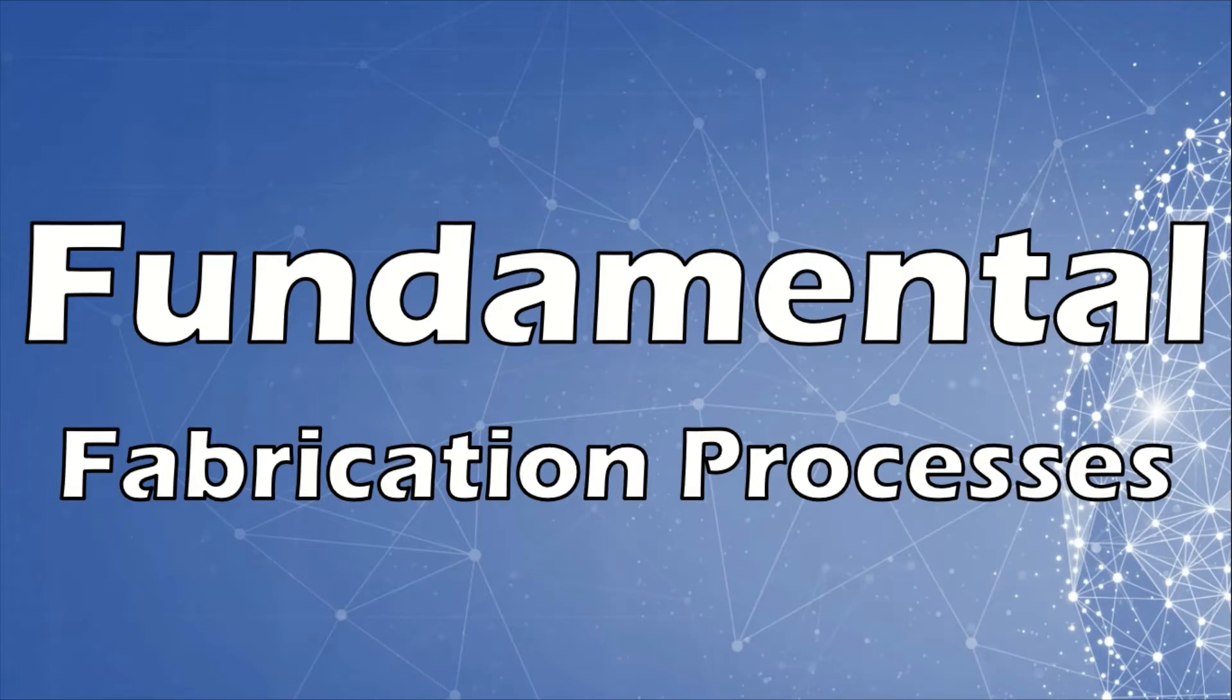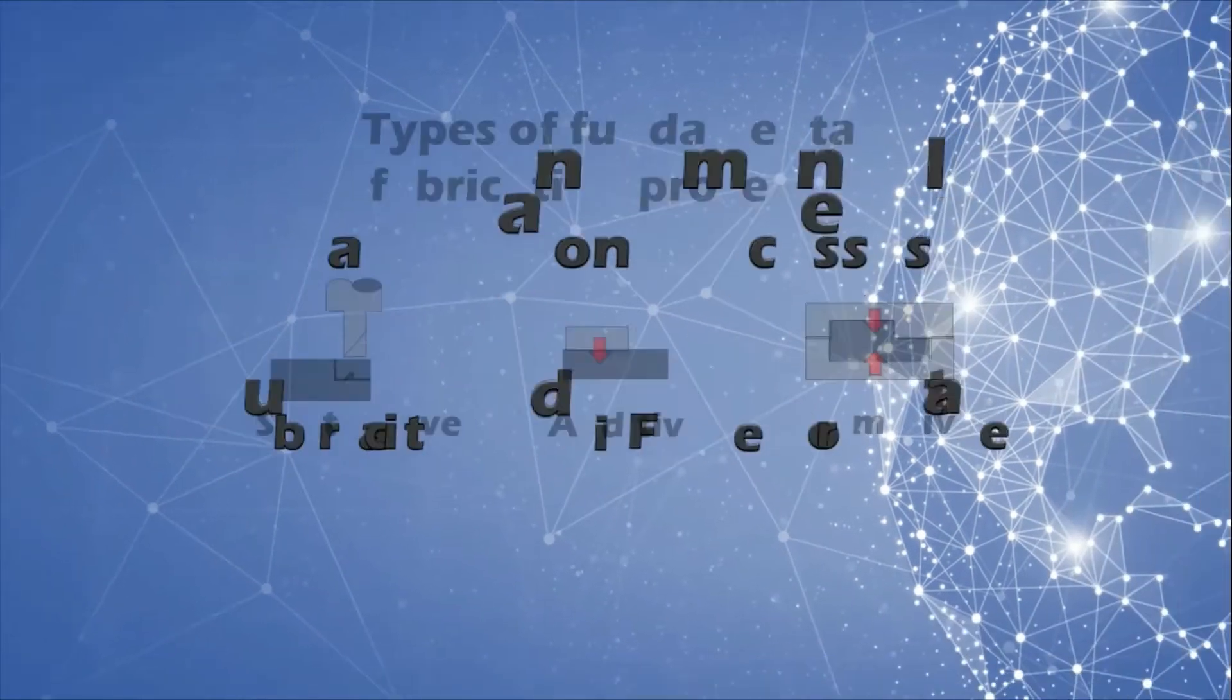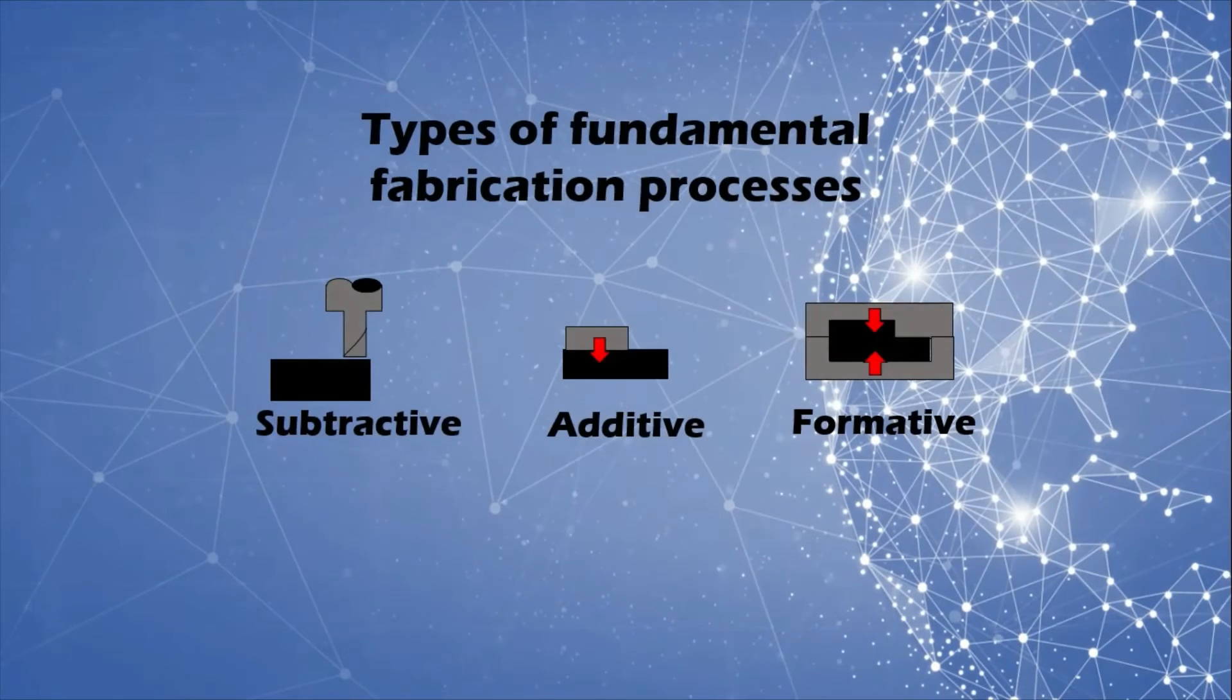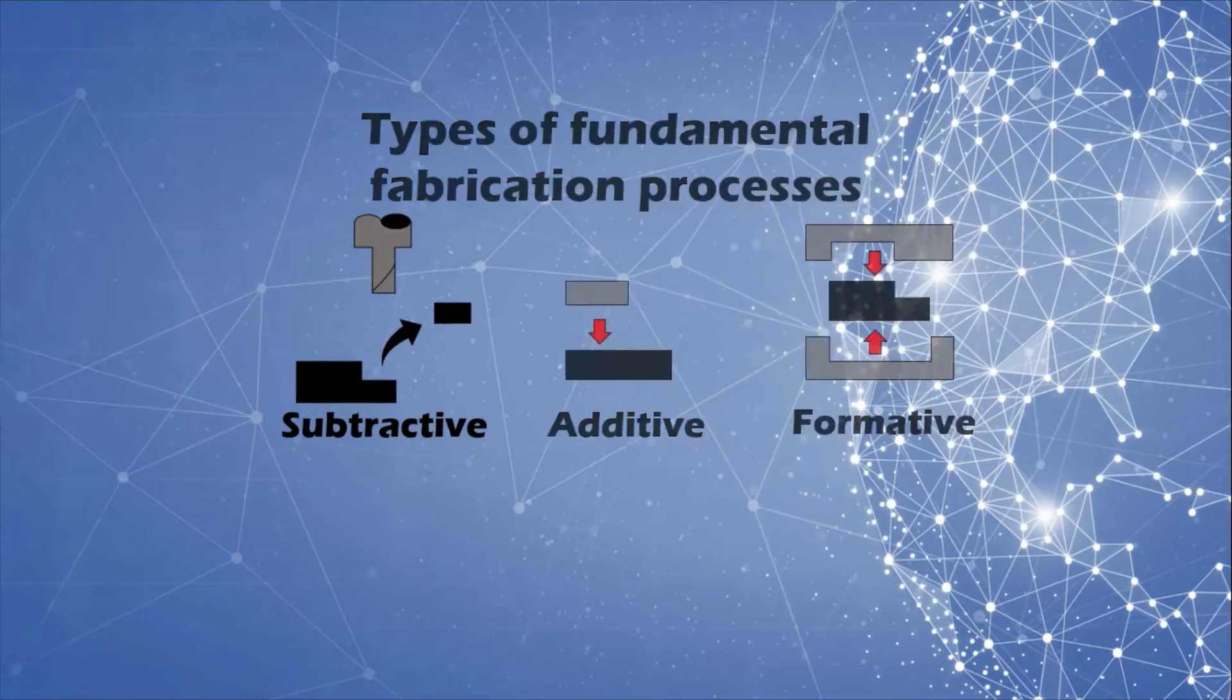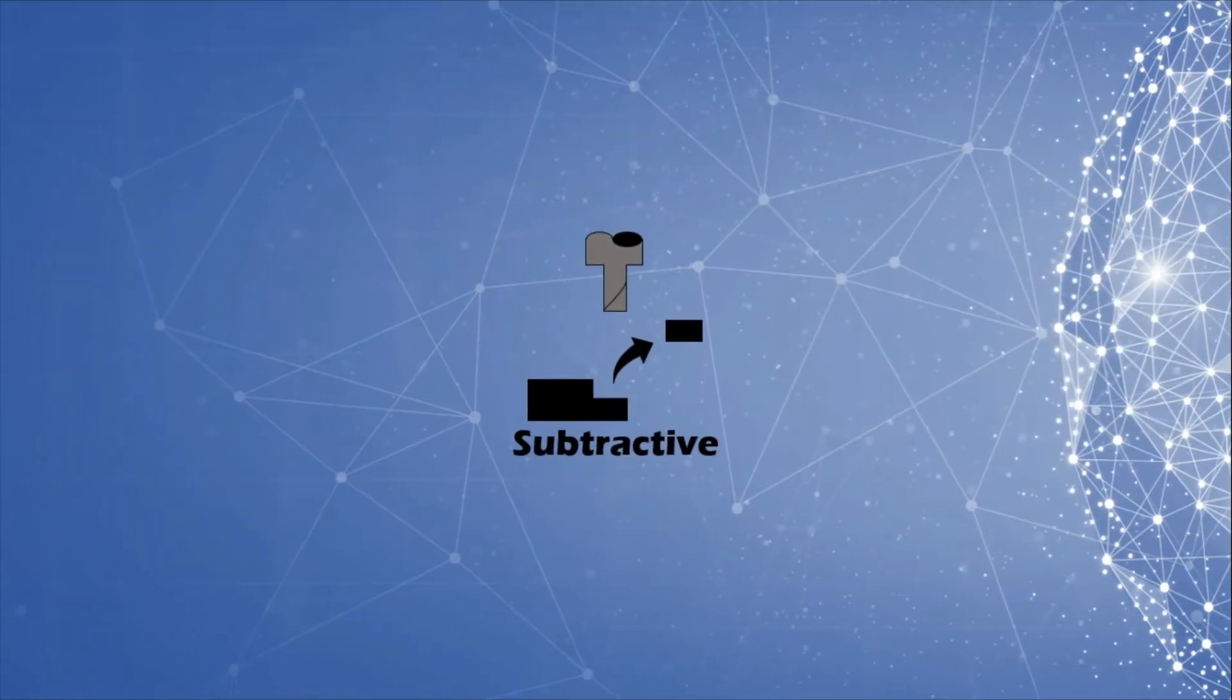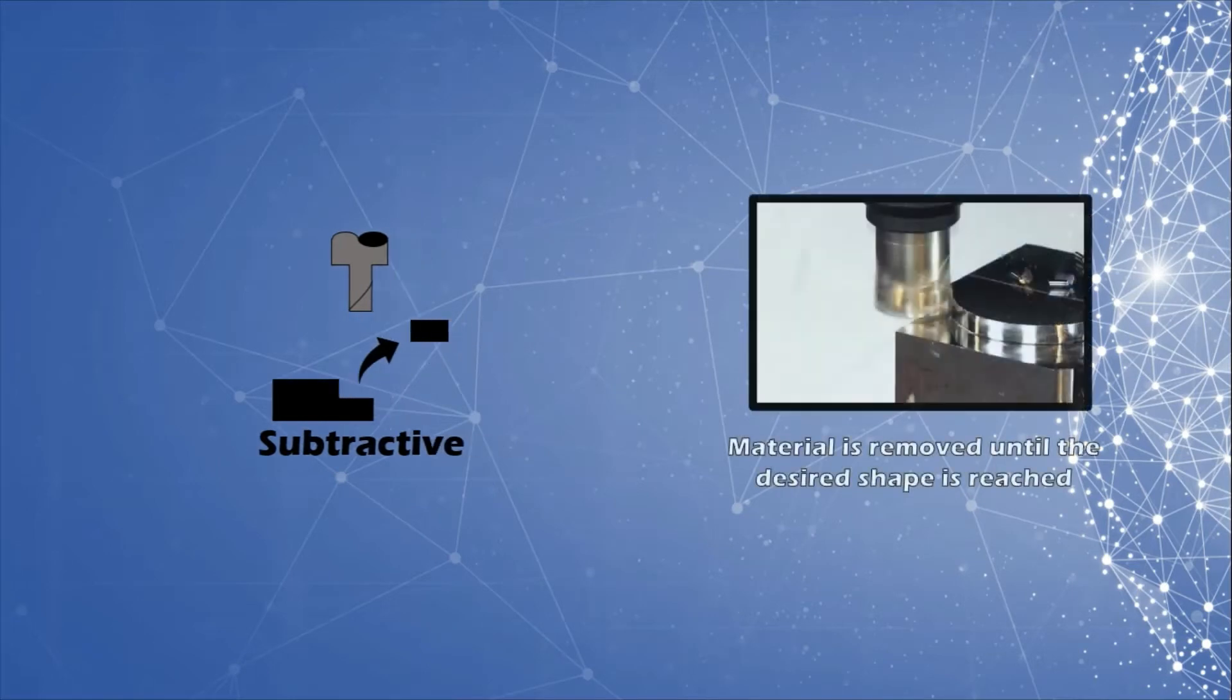There are three fundamental fabrication processes: subtractive, additive, and formative processes. In the subtractive process, one starts with a single block of solid material which is larger than the final size of the desired object.